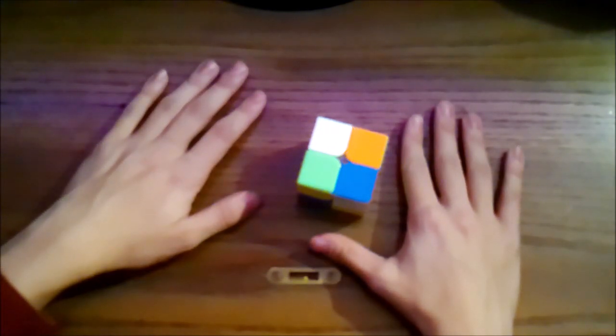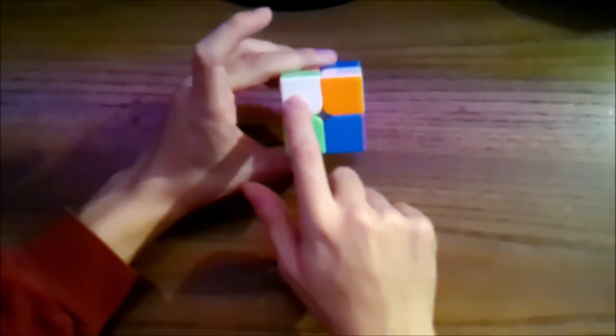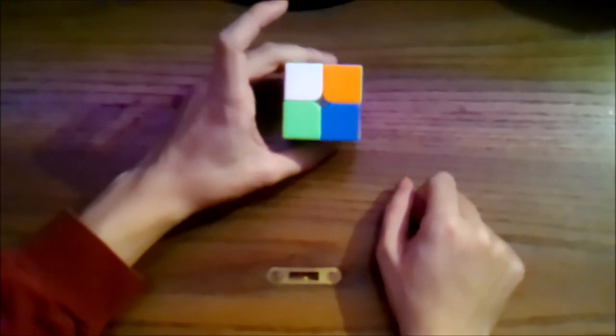The first thing you want to do is familiarize yourself with the different parts of the cube. Each of the small squares on the cube is called a sticker, and each side of the cube is made up of 4 stickers. There are 6 sides to the cube in total.